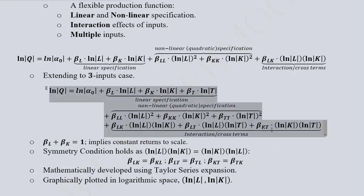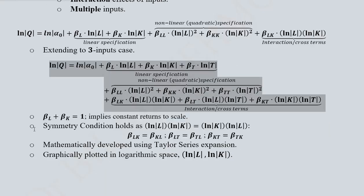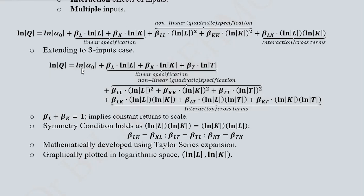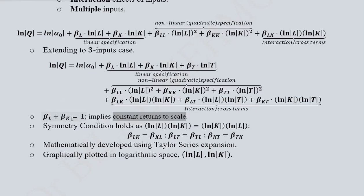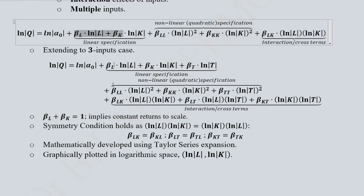There are two economically meaningful assumptions. First, in the translog production function the coefficients of labor and capital appear in terms of their natural log limit forms in the linear specification. If their coefficients sum to one, we have constant returns to scale. If they do not sum to one, we have variable returns to scale — either decreasing returns to scale or increasing returns to scale.